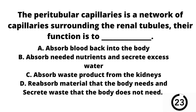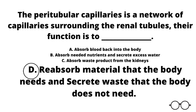Question number 13. The peritubular capillaries is a network of capillaries surrounding the renal tubules. Their function is to: A absorb blood back into the body, B absorb needed nutrients and secrete excess water, C absorb waste product from the kidneys, or D reabsorb material that the body needs and secrete waste that the body does not need. Our answer here is D. Remember that reabsorption means nutrients or products from the tubules are going into your bloodstream, while secretion is the opposite — materials from your blood secreting out and going into your tubules.